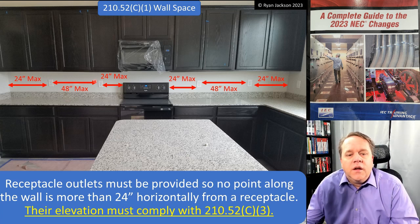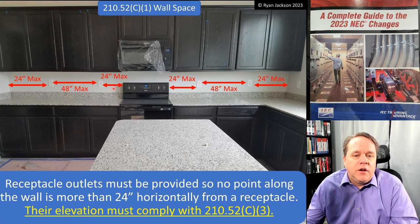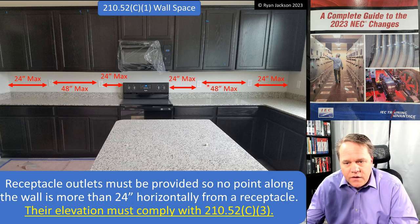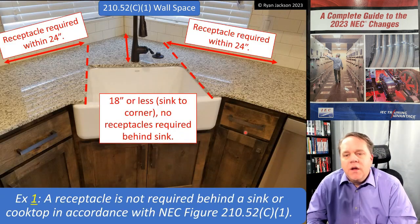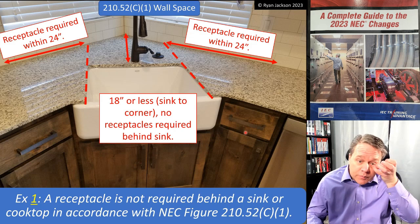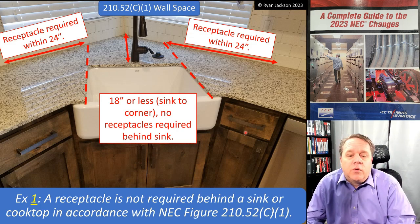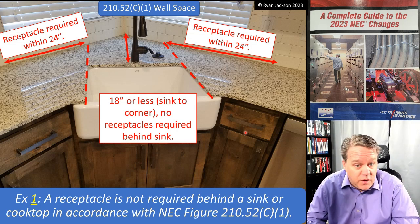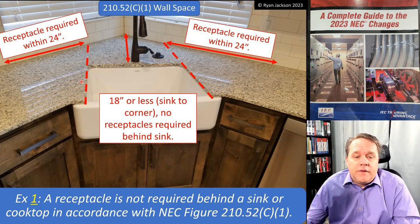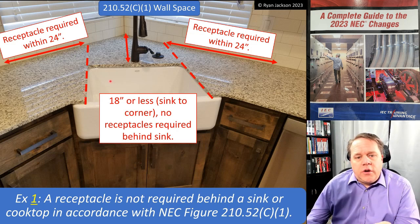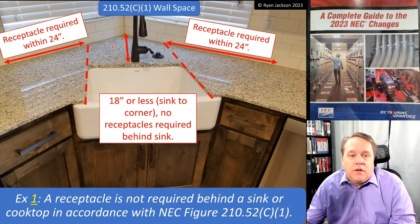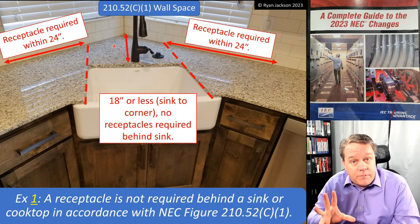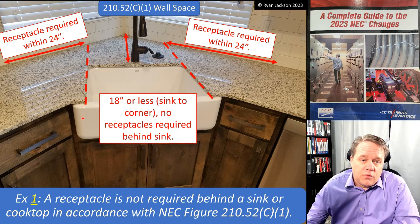Butt the tape into the left, pull it to the right — you need a receptacle within two feet, then four feet, then butt it into the range and pull left, needing a receptacle within two feet. That measurement rule hasn't changed. There's still an exception: a receptacle is not required behind a sink or cooktop. Per Figure 210.52C1, if the corner-to-back-of-sink distance is less than 18 inches, no receptacle is required behind the sink.